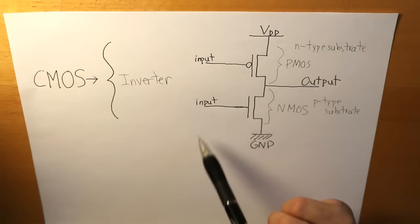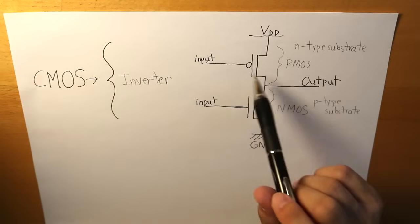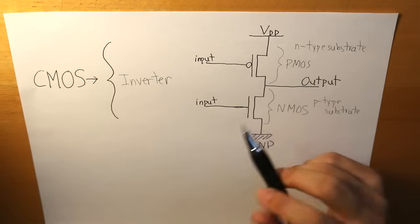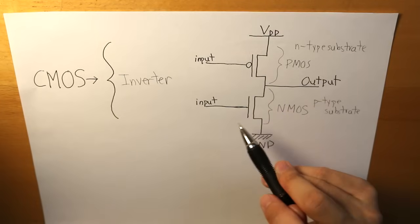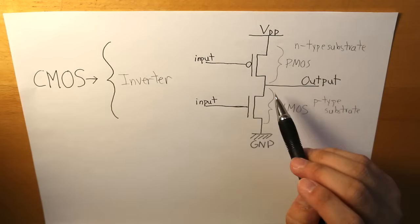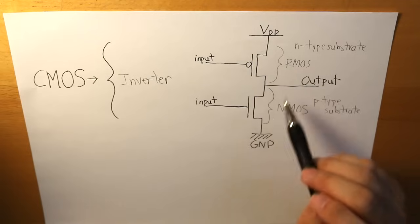Now if the input is high, PMOS will be turned off because it gives us the opposite effect. Then the NMOS is going to be turned on so it will be closed and the ground, the magnitude of the voltage in the ground which is zero, will travel to the output so the output is going to be low.